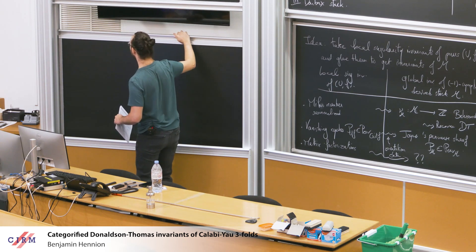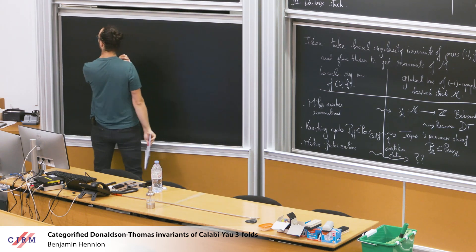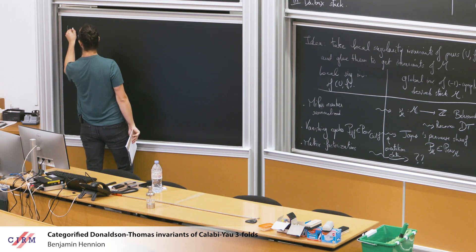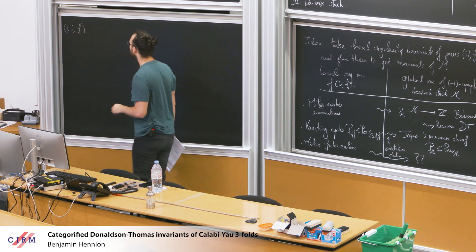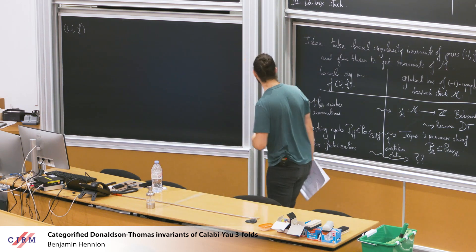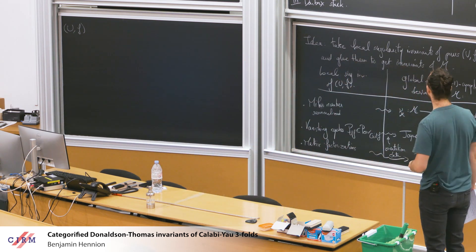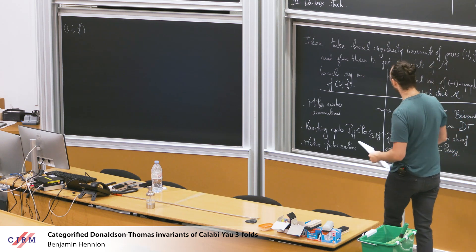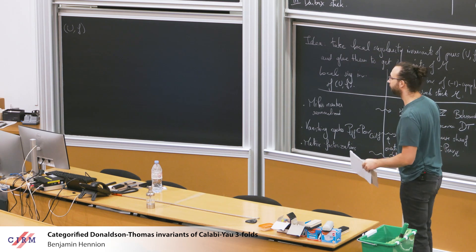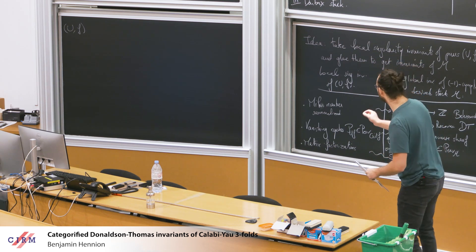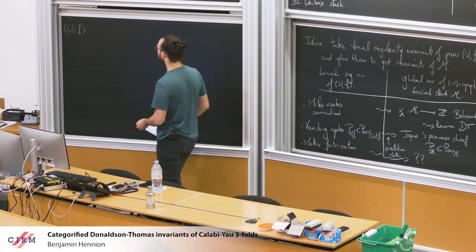What are my indeterminacies? Let me take various pairs U, F. Part of the statement: if I can glue, it means it doesn't depend on the choice of the pair U, F for a specific neighborhood of any point in my stack. In particular, I can find several pairs U, F with the same derived critical locus.